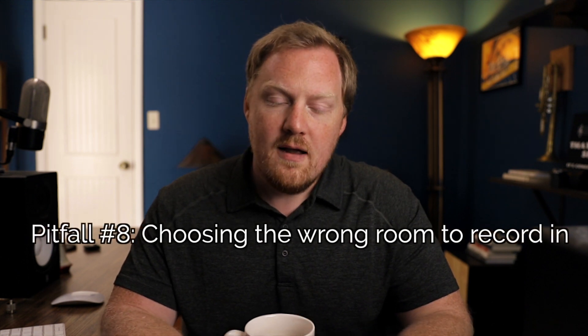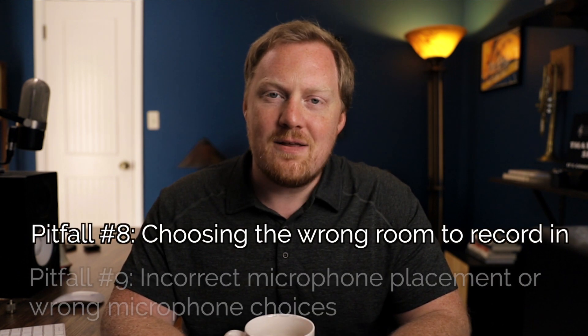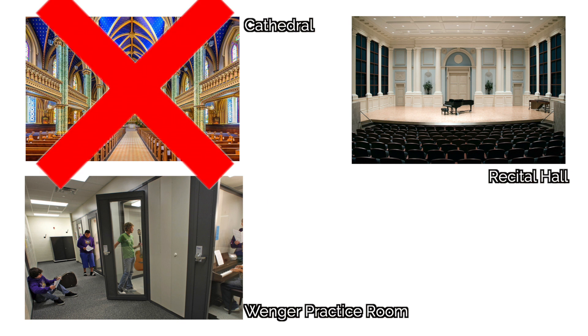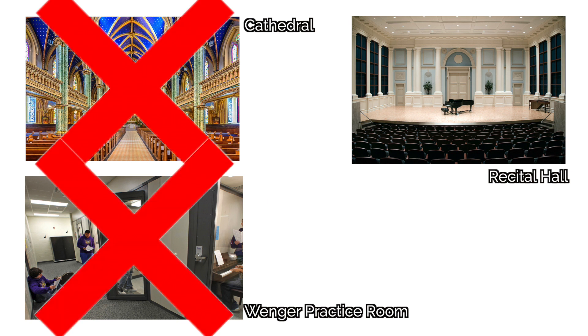Moving on to the audio category, the first two pitfalls are related to each other. The first is choosing the wrong room to record in, and the second is placing the mic in the wrong spot or choosing the wrong microphone. Generally speaking, we don't want the room to be too live or too dry. If you have access to a hall with medium reverberance, you're going to get a nice blend of room beauty while still maintaining clarity in your trumpet playing.